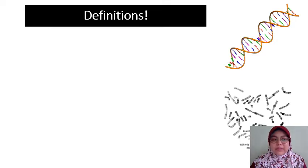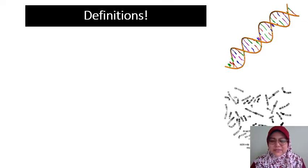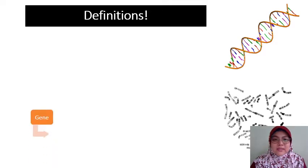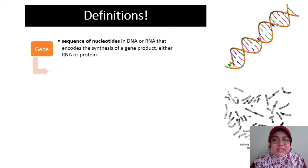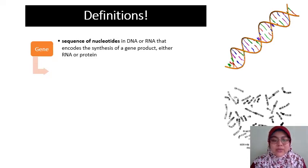We've been talking about genes and genetics, and now I'm going into genome, and there's even a field called genomics. What's the difference? Let's look at a gene. A gene is a sequence of nucleotides in DNA or RNA that encodes the synthesis of a gene product, either RNA or protein.